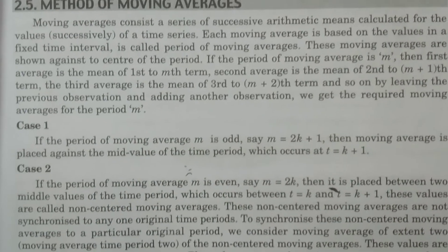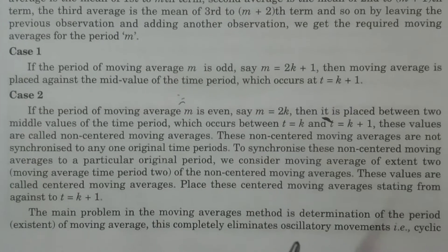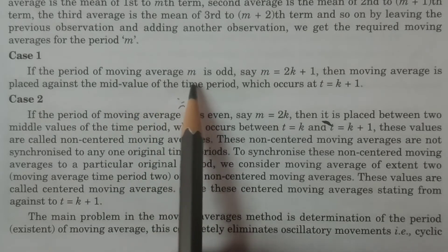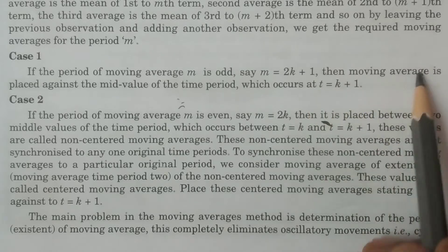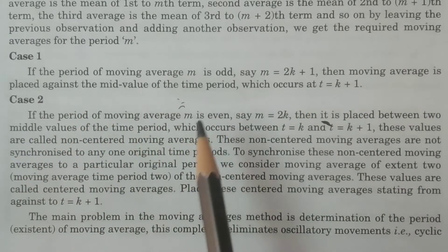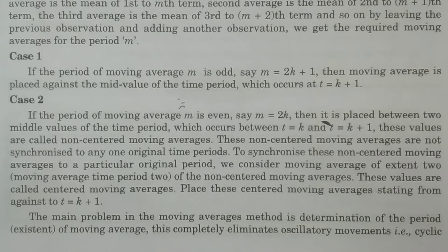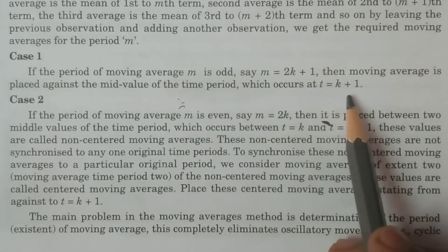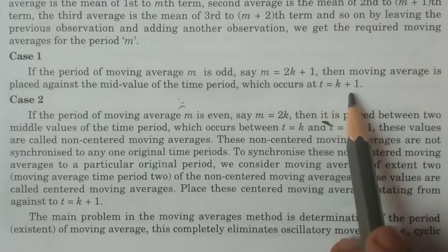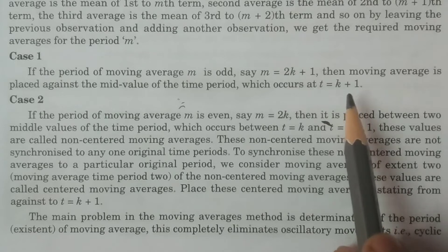We have two cases: odd and even. Case one: if the period of moving average m is odd, say m equals 2k+1, then the moving average is placed against the mid value of the time period — the center value — because of the odd numbers. For example, with five numbers, the exact middle period is the third one. It occurs at t equals k+1, and against this particular time period you place the moving averages.